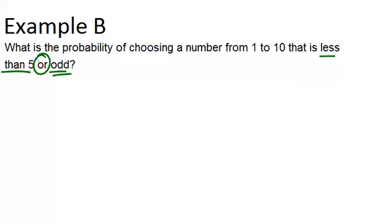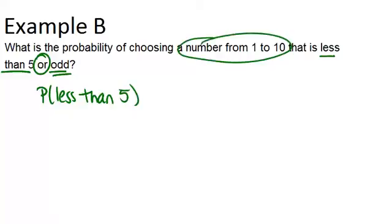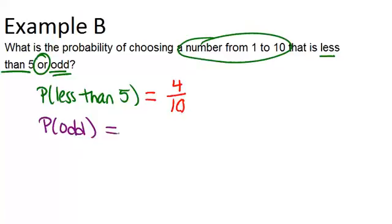Let's think about the probabilities separately. The probability that we pick a number less than 5: our sample space is the numbers from 1 to 10, so the numbers less than 5 are 1, 2, 3, and 4 — that's 4 numbers. So the probability is 4 out of 10. Now, the probability that the number we choose is odd: there are 5 odd numbers from 1 to 10 — 1, 3, 5, 7, and 9 — so the probability is 5 out of 10.